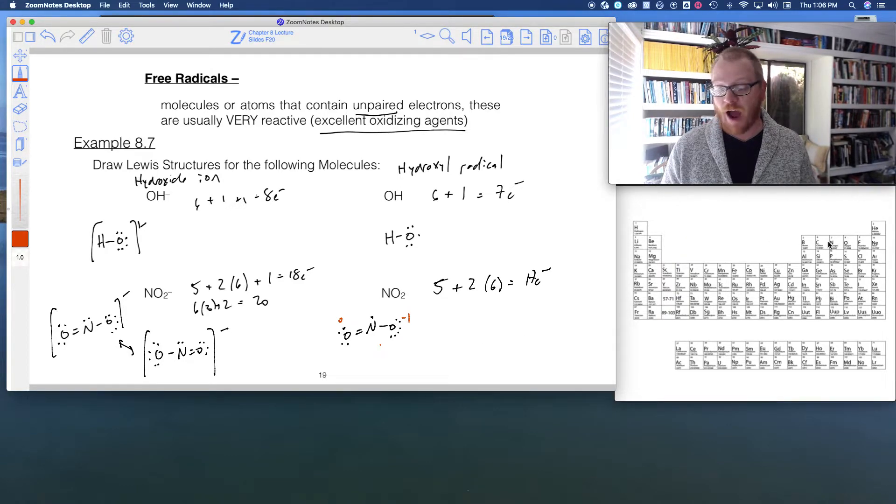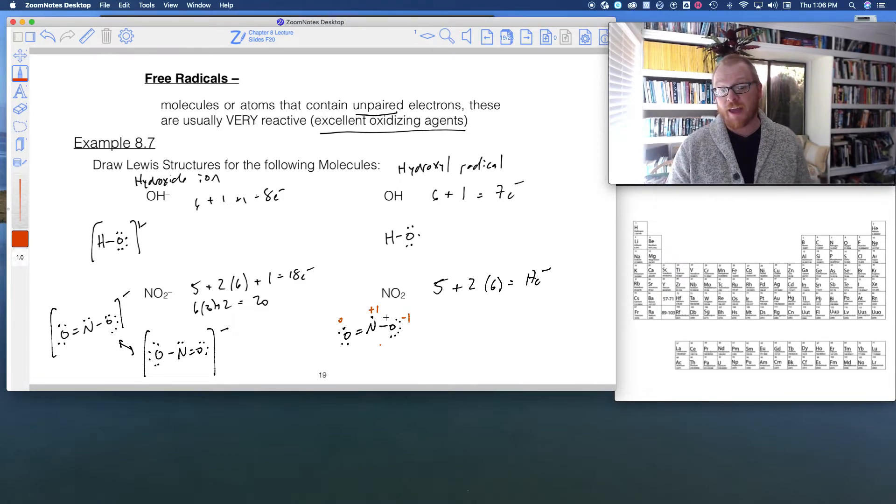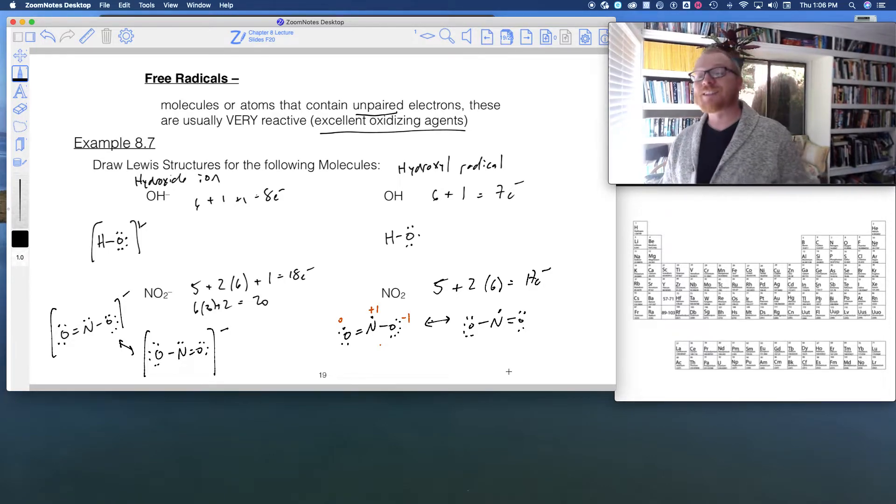And so now what's the formal charge on this nitrogen? Well, nitrogen is five, one, two, three, four, five minus the dots plus sticks. So that's one dot plus one, two, three sticks. So if you follow that formula quickly, that ends up being plus one. And that's not terrible for nitrogen. Better to be plus one on nitrogen than plus one on oxygen. Because if we put the radical on the oxygen, then the oxygen would be a zero, but a single bonded oxygen really wants to be a negative one. And of course, we still have a resonance structure where this can now flip, the oxygen can flip the other side. But the radical is still in the nitrogen.